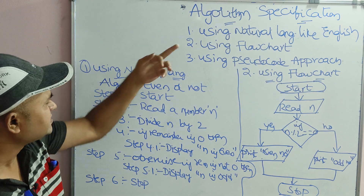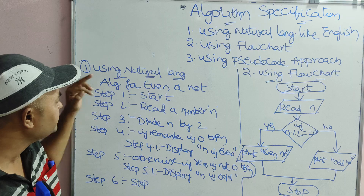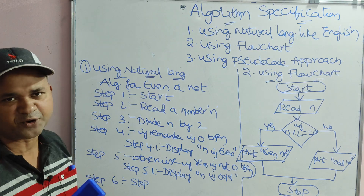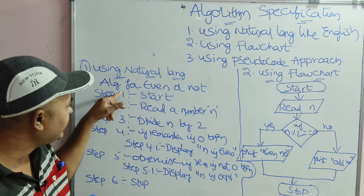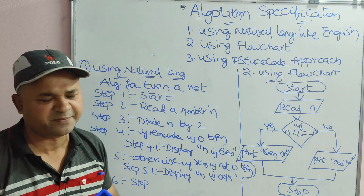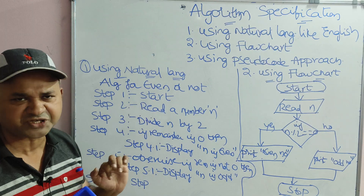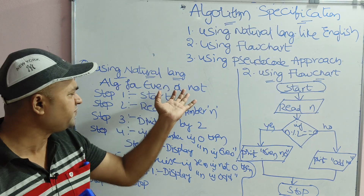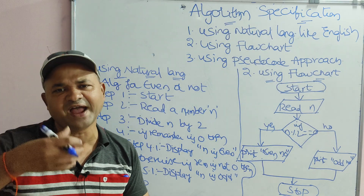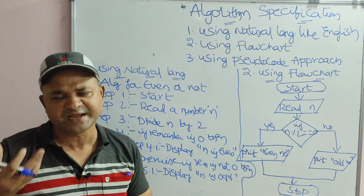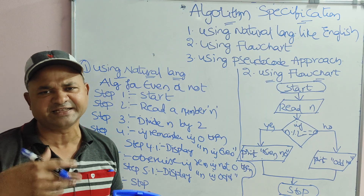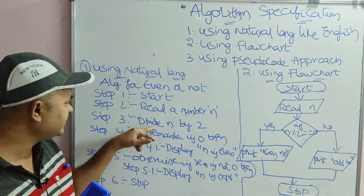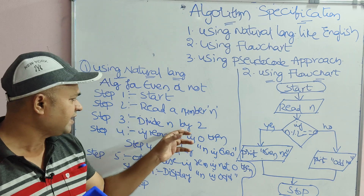The first approach is writing an algorithm using natural language, which is step-by-step notation. Let us write an algorithm for even or odd number. Step 1 is start. Step 2 is read a number n. Step 3: we know the logic — if we divide a number by 2 and the remainder is 0, then the number is even; otherwise the number is odd. So step 3 is divide the number by 2.